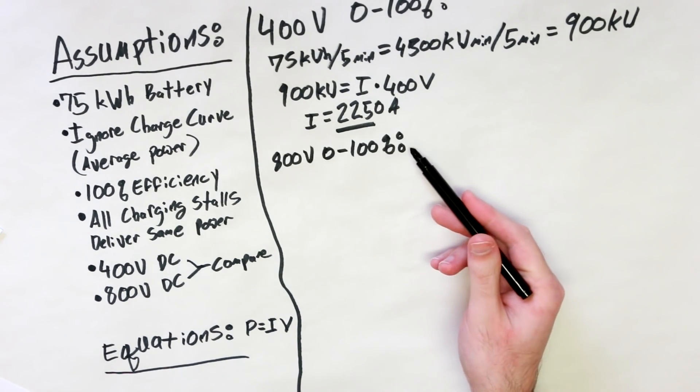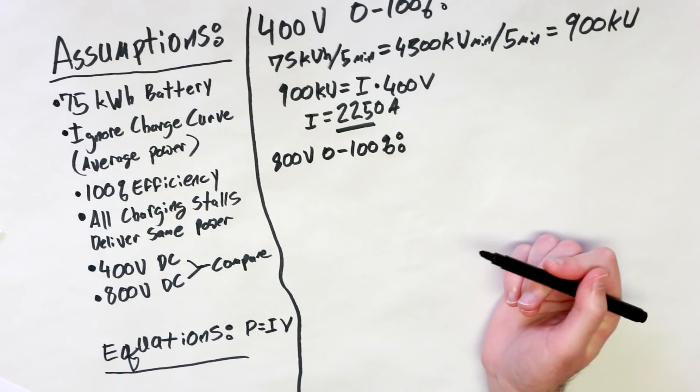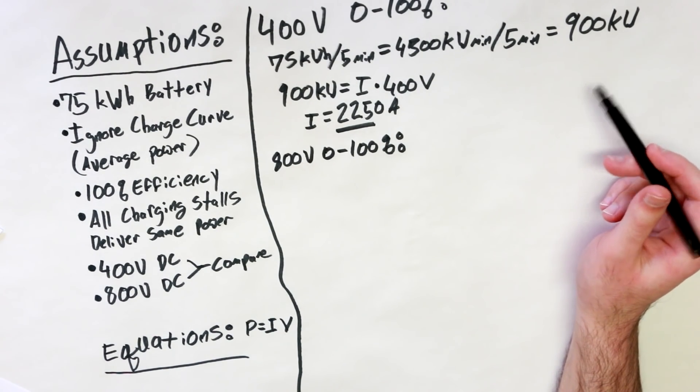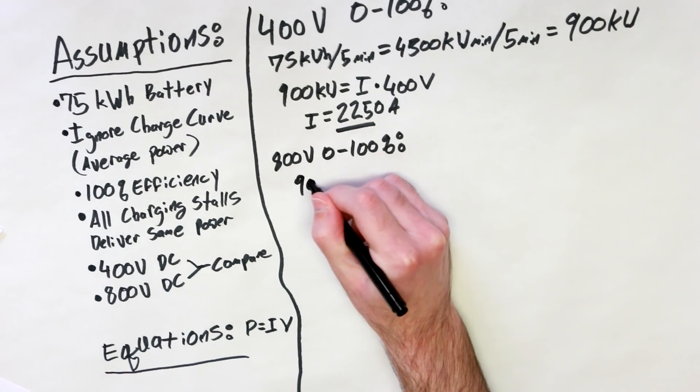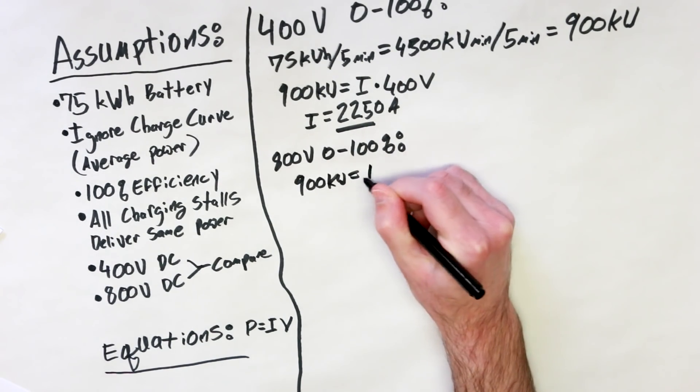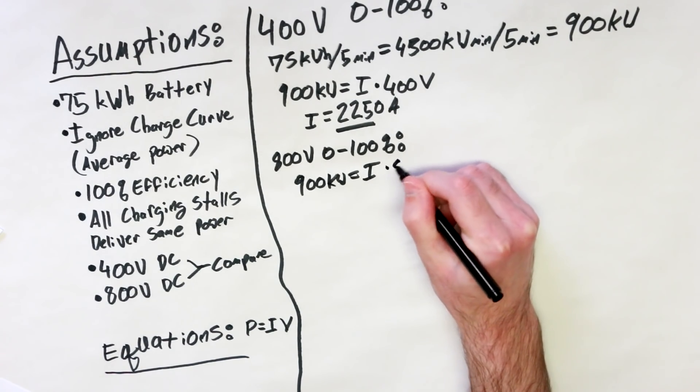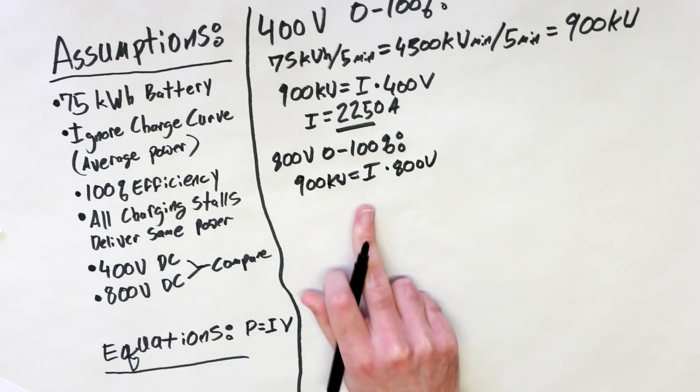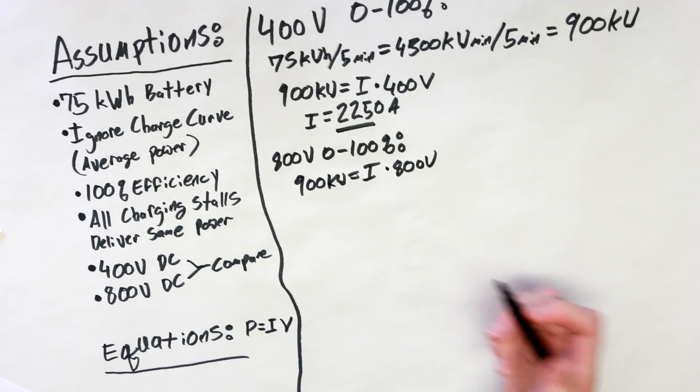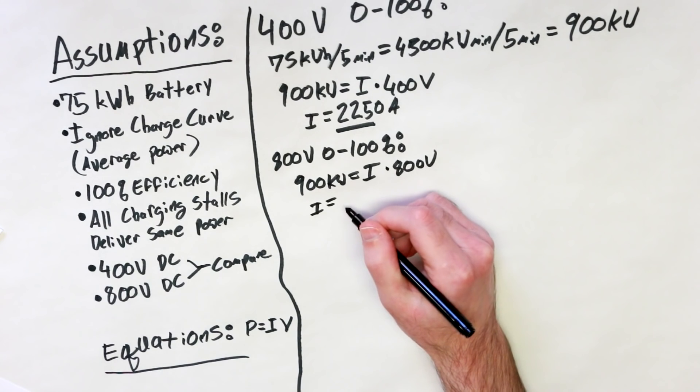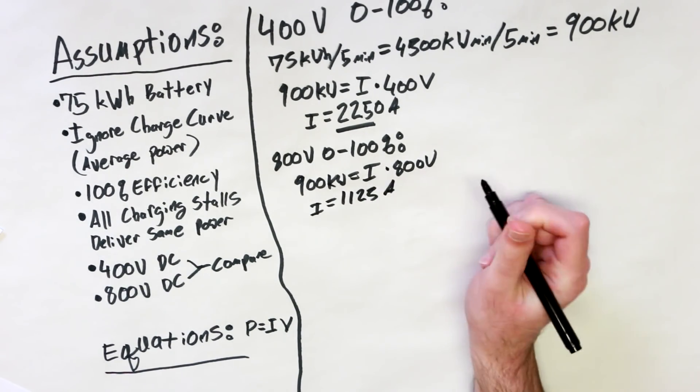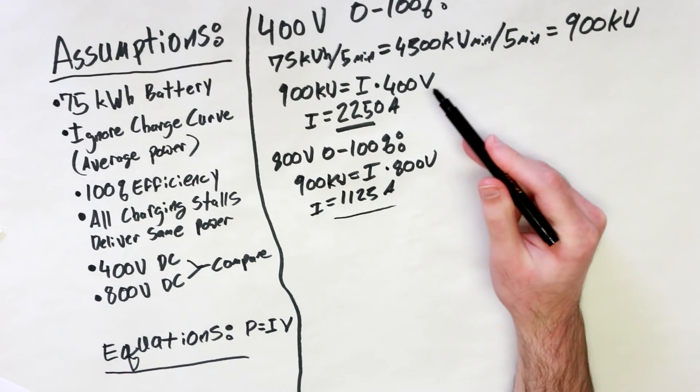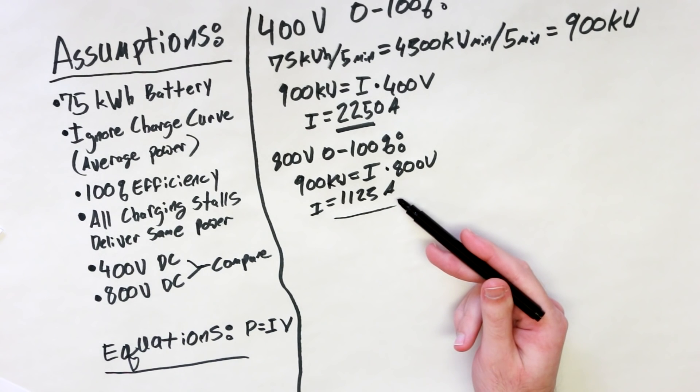Now, if we were to do the same thing with a hypothetical 800 volt system, going from 0% to 100%, the wattage doesn't change. What will change, however, is the current required to do it. And so, we would just be looking at 900 kilowatts equals I times 800 volts. Again, we're solving for I, so you divide 900,000 by 800, which gives us I equals 1,125 amps, which is half of the current required to do it at 400 volts. That's a little better, but still pretty scary.